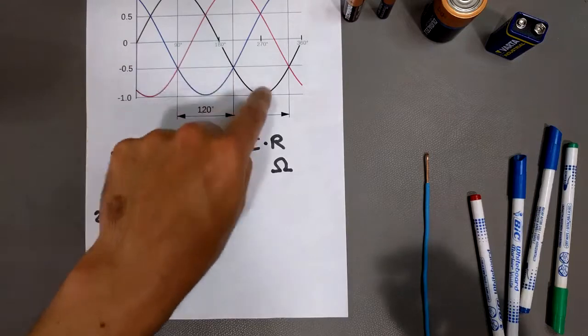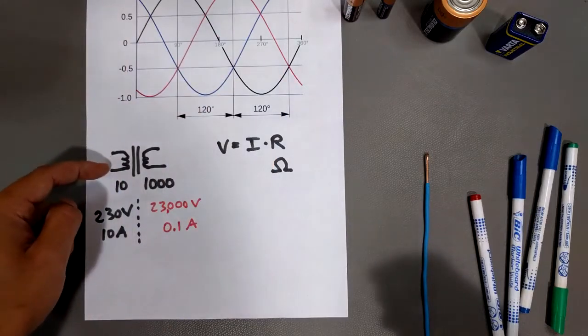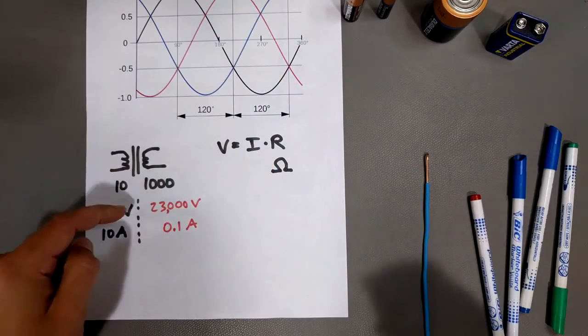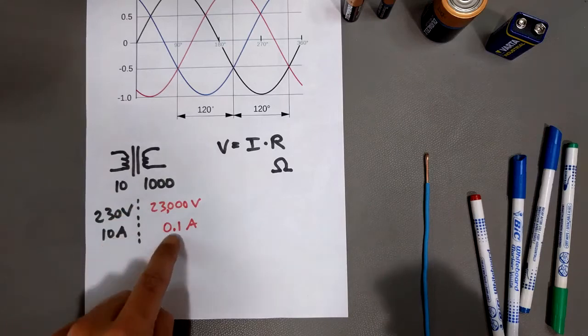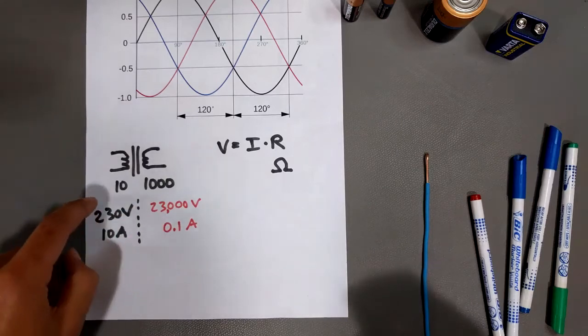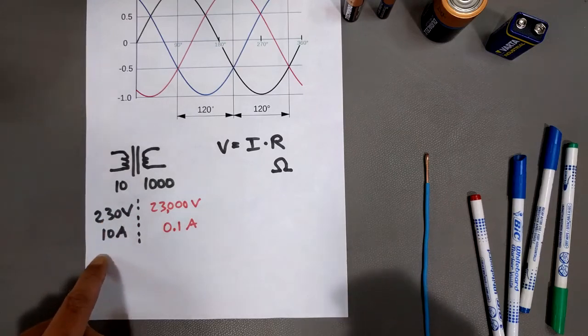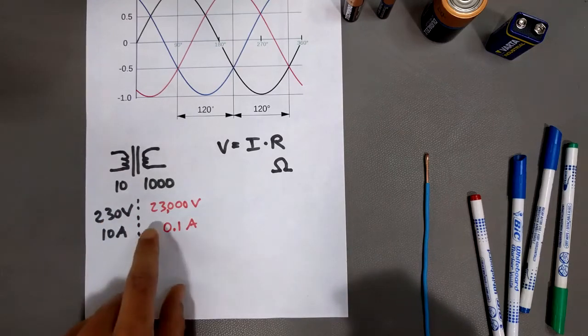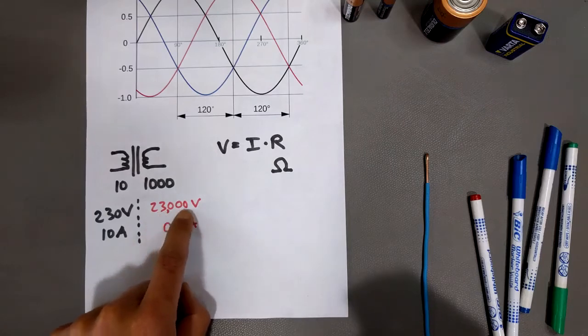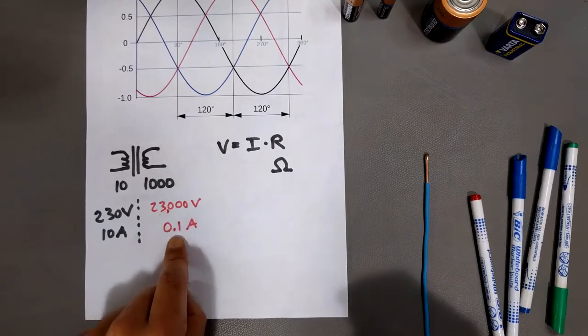So it's the fact that you have AC, and the fact that you can then put it in a transformer, you can boost the voltage really high, which also simultaneously reduces the current, because the power is the same. 230 volts times 10 amps is 2300 watts.